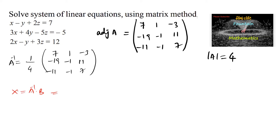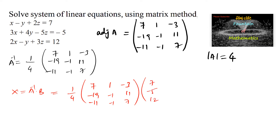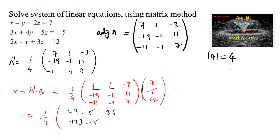X equals A inverse times B, which is 1 over 4 times [7, 1, negative 3; negative 19, negative 1, 11; negative 11, negative 1, 7] times [7, negative 5, 12]. Multiplying row by column: first row gives 7 times 7 plus 1 times negative 5 plus negative 3 times 12; second row gives negative 19 times 7, minus 133 plus 5 plus 132; third row gives negative 77 plus 5 plus 84.